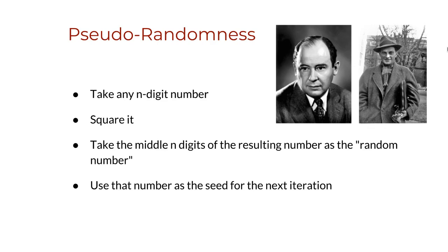John von Neumann suggested it in 1946 for the purpose of devising, together with Stanislaw Ulam, another very famous mathematician, what would later become known as the Monte Carlo method for the simulation of physical processes, motivated by their work at Los Alamos National Laboratory while building the atomic bomb. Iterating, von Neumann's procedure produces a series of numbers generated by a deterministic process intended merely to imitate a random sequence.